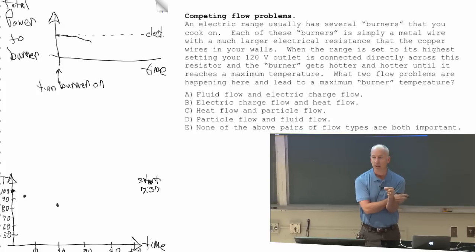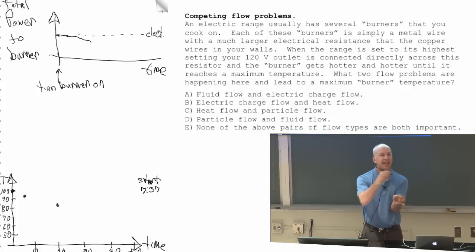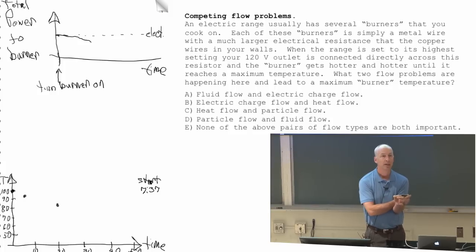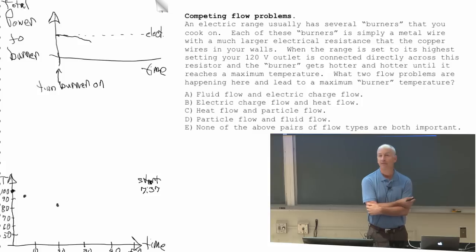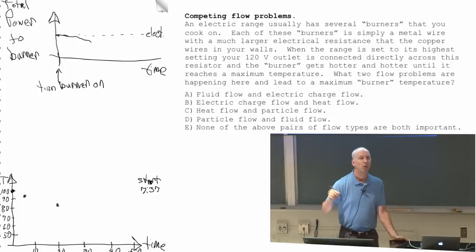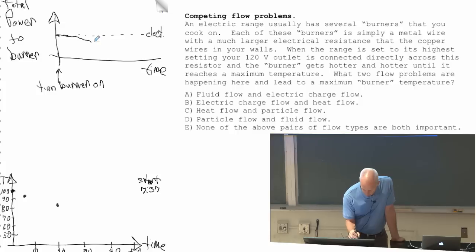I'm going to call it total power to the burner because the electrons are delivering a constant amount of power, I squared R to the burner, and something else is taking power away. And that's the temperature gradient because the burner's hot. So there's heat flow away. As the burner gets hotter and hotter, the heat flow away gets bigger and bigger.